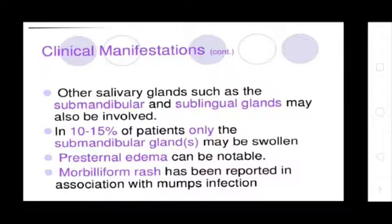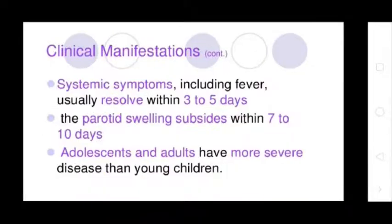Other salivary glands such as the submandibular and sublingual glands may also be involved. In 10 to 15% of cases, only the submandibular glands may be swollen. Presternal edema can be notable. A morbilliform rash has been reported in association with mumps infections.